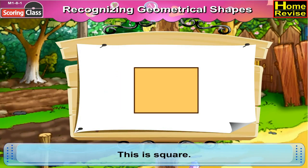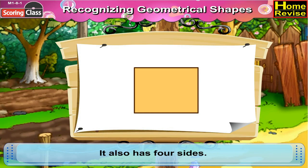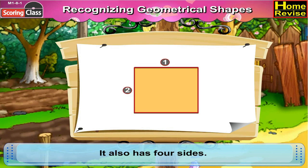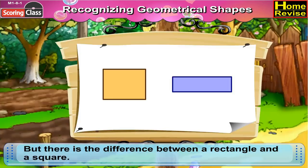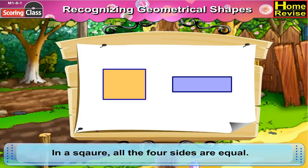The last shape is a square. It also has four sides: one, two, three, four. But there is a difference between a rectangle and a square. In a square, all the four sides are equal.